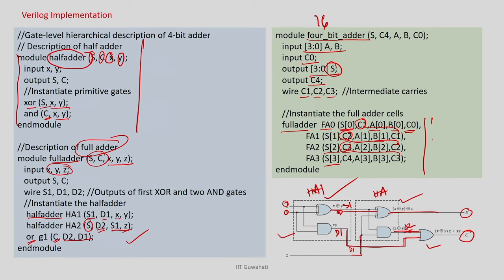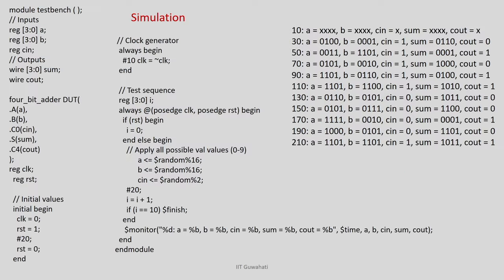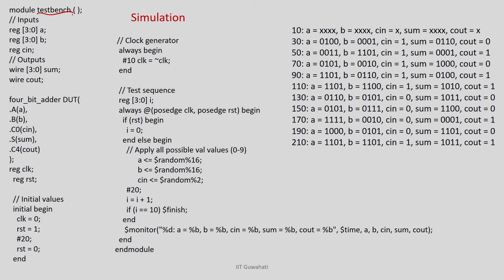Once you know the architecture, implementation in Verilog is very straightforward — you just encode your architecture in Verilog syntax. This is my implementation of the 4-bit full adder. For a 16-bit version you would make 16 instantiations in the same manner.